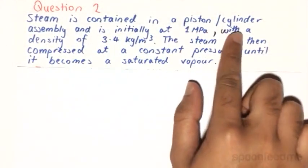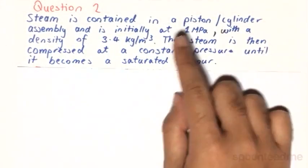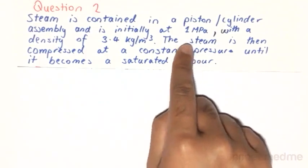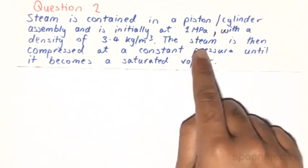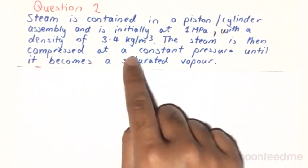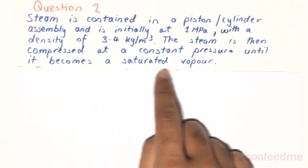Steam is contained in a piston cylinder assembly and is initially at 1 megapascals with a density of 3.4 kilograms per metre cubed. The steam is then compressed at a constant pressure until it becomes a saturated vapour.